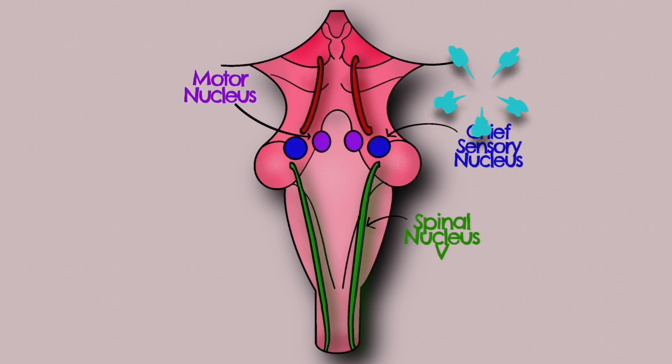The mesencephalic nucleus contains the cell bodies of sensory neurons carrying proprioceptive information from the temporomandibular joint of the jaw. Interestingly, these cell bodies are not located in the trigeminal ganglion like the other sensory neurons, making them the only cell bodies to be located within the central nervous system.